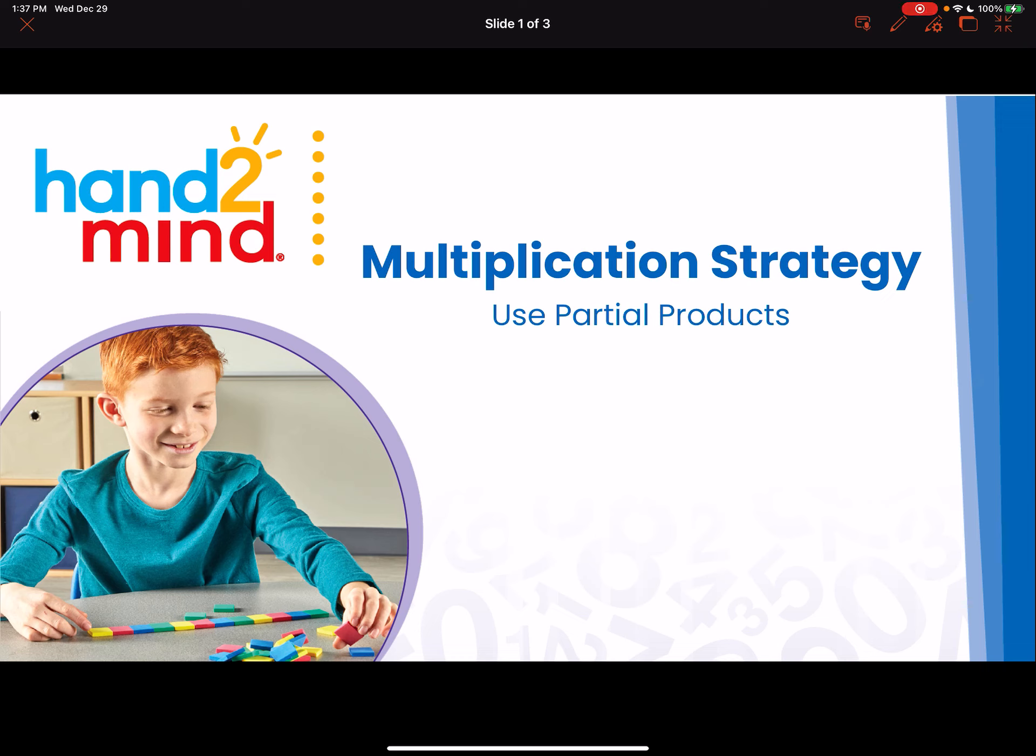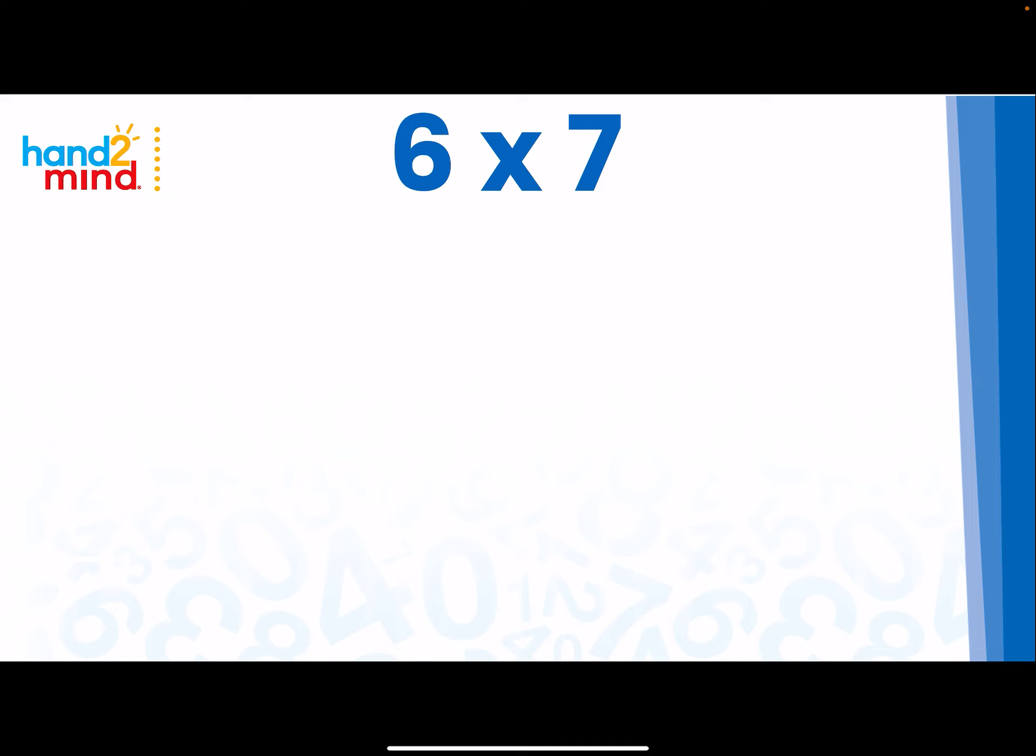This video is about the multiplication strategy called using partial products. Let's take a look at what this strategy looks like with a problem. We're going to begin with using 6 times 7.